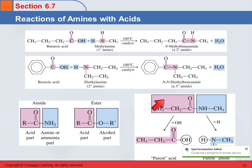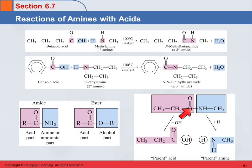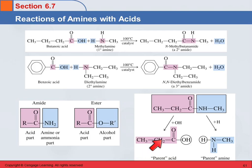When we have an amide and want to know what it came from, we cut it down the middle between the carbon and the nitrogen, and we can see what we needed to make it. This is the parent acid, and that's the parent amine. So if we react propanoic acid with methylamine, we'll end up with N-methylpropanamide.